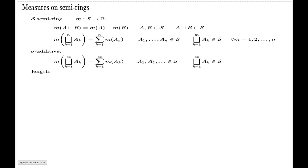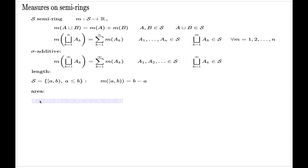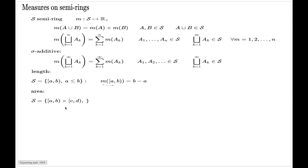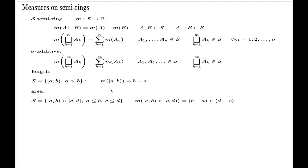Two canonical examples are length and area. Length is a measure defined on a semi-ring of half-open intervals, with the standard formula. Area is a measure defined on a semi-ring of half-open rectangles, with the corresponding formula. It is a relatively easy task to verify that both of these measures are in fact measures — they are additive and satisfy this property.